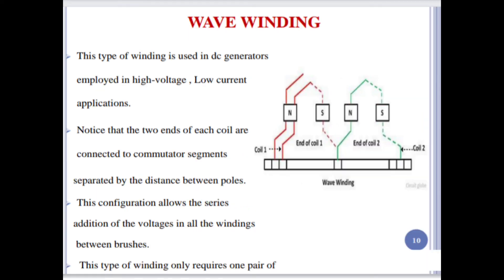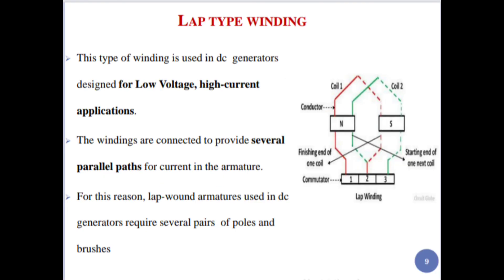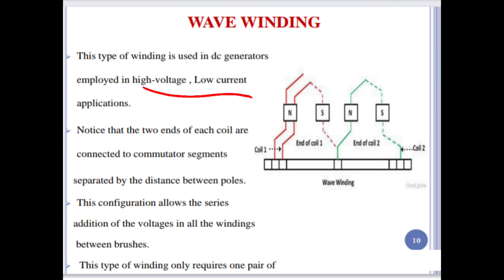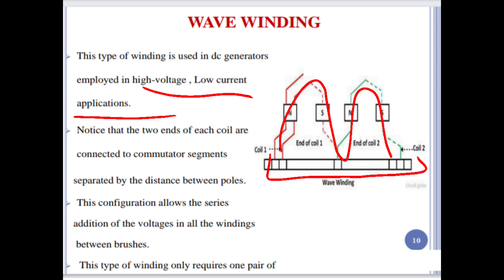Wave winding is used in DC generators employed in high voltage, low current applications. Lap winding is always used for low voltage, high current applications — this is very important for MCQ and exam purposes. In wave winding, the two ends of each coil are connected to commutator segments. This configuration allows the series addition of voltage in all the windings between the brushes, and this type of winding only requires one pair of brushes.